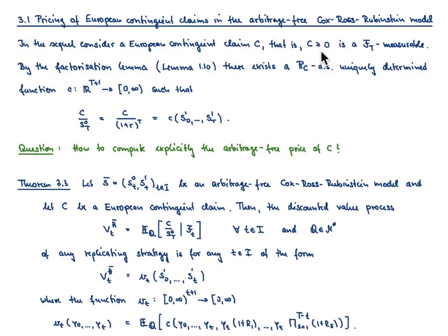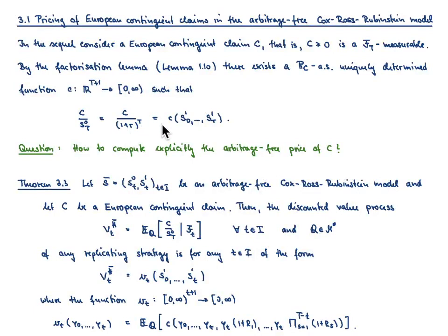The advantage of the factorization lemma is the following. We know that we can represent any F_T measurable random variable in terms of a P-almost surely uniquely determined function little c, which maps R to the power of capital T plus 1 to the non-negative reals. This function c is chosen so that the discounted European contingent claim — that is, the claim divided by the deterministic factor (1+r)^T — can be written in terms of this function little c of the random variables S_1^0 up to S_1^T. This representation is quite useful for deriving explicit formulas for the arbitrage-free price of a European contingent claim.